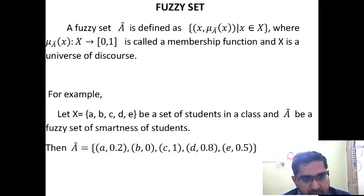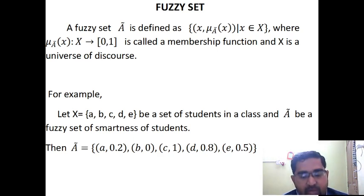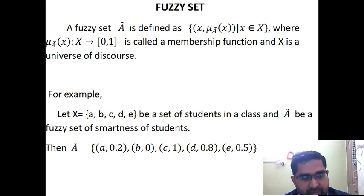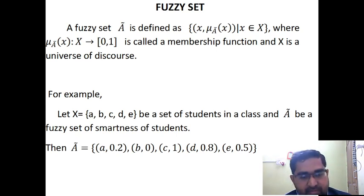In the Crisp Set, we can only say whether they are smart or not smart. But using the Fuzzy Set, we can say how smart they are. This is the advantage of the Fuzzy concept.